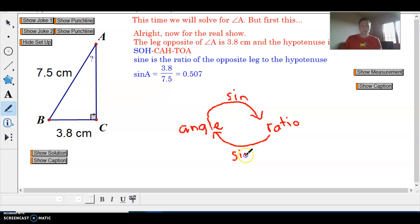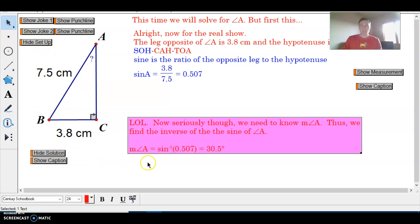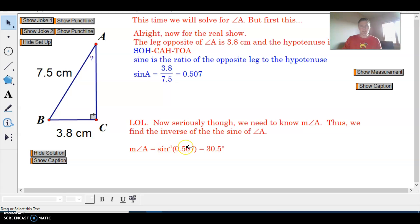So inverse sine on your calculator probably has this little negative 1 that is used as an inverse symbol. Okay, so I'm going to do inverse sine on my calculator here. Okay, so to get the measure of angle A, you have to do the inverse sine of the ratio, right? And then on your calculator, make sure you're in degree mode again if you're not getting that, right? Okay, so you should get 30.5 degrees for the measure of angle A.